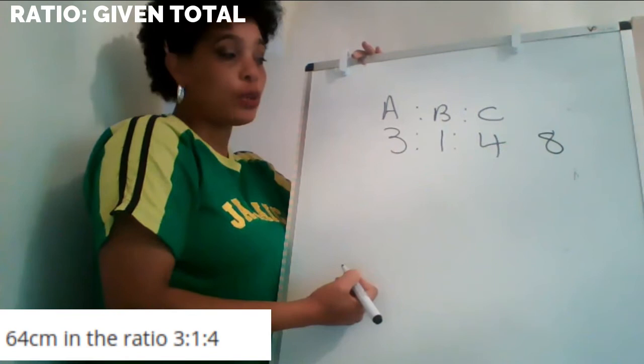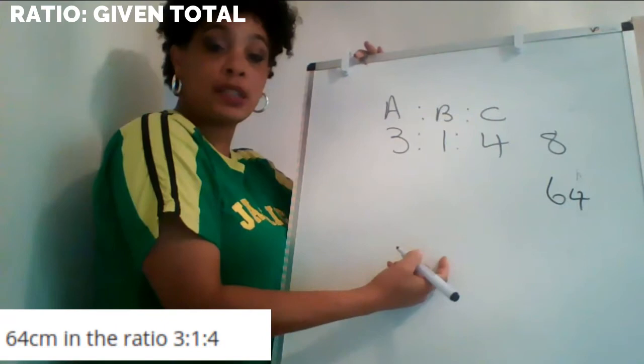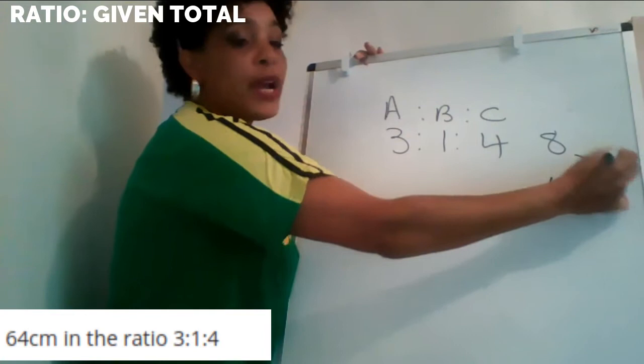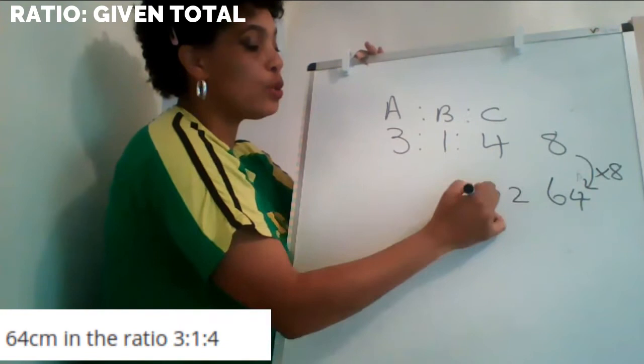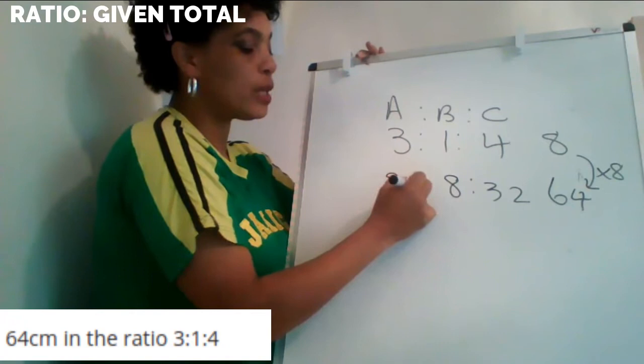How much money do I have to share into eight parts? 64 pounds. So I put my 64 under my eight. What do I do from eight to get to 64? I times it by eight. So four times eight is 32, one times eight is eight, and three times eight is 24. So my answer is 24 to eight to 32.